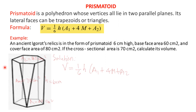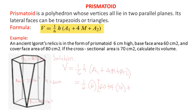Problem: Ancient Igorot relics in the form of a prismatoid, 6 cm high, 60 cm at the bottom, 80 cm at the top, and 70 at the middle area. Find its volume. Following the formula: volume equals one-sixth times H times (E1 plus 4M plus E2). Substituting: one-sixth times 6 times (60 plus 4 times 20 plus 80). The answer is 420.